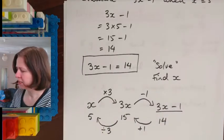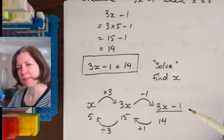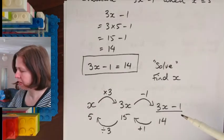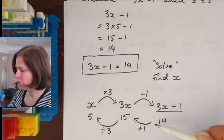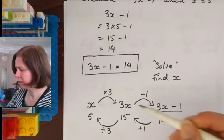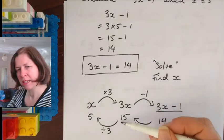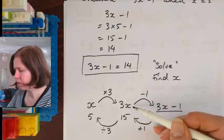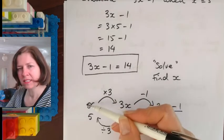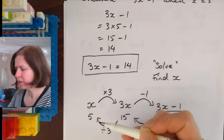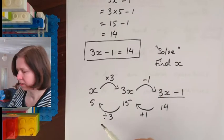15 divided by 3 gives me 5. Now I want you to notice that at every step here these parts were equal right? 3x minus 1 is equal to 14. The 3x part is equal to 15 and the x is equal to 5. So my solution then is x equals 5.